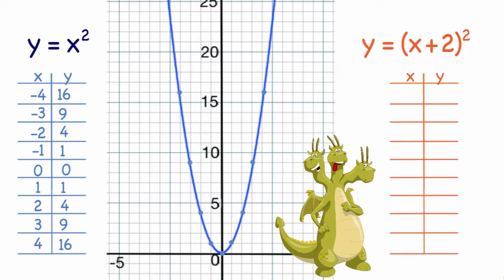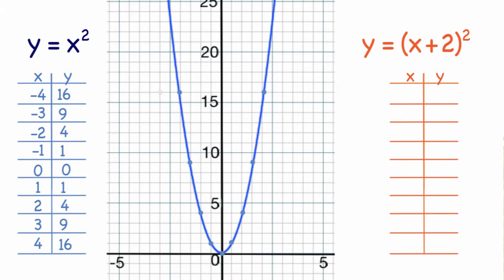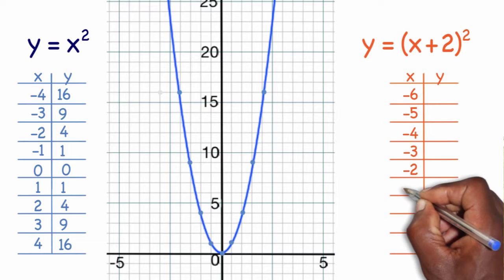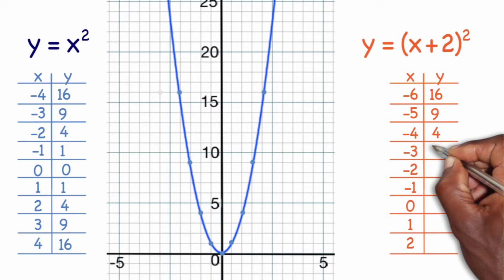We're going to generate some values for x. Since we're shifting the graph over, instead of starting with negative 4, I'm going to start two spots to the left at negative 6, and go up to positive 2. Plugging in negative 6: negative 6 plus 2 is negative 4, negative 4 squared is 16. Negative 5 plus 2 is negative 3, negative 3 squared is 9. Negative 4 plus 2 is negative 2, negative 2 squared is 4.